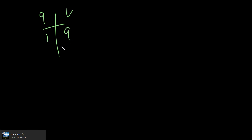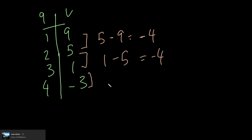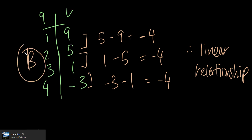Now let's do option B. The values are: Q=1, V=9; Q=2, V=5; Q=3, V=1; Q=4, V=-3. Taking first differences: five minus nine equals negative four. Then one minus five also equals negative four. And negative three minus one equals negative four. All the first differences are the same value of negative four, which means this is also a linear relationship. So B is not our answer either.